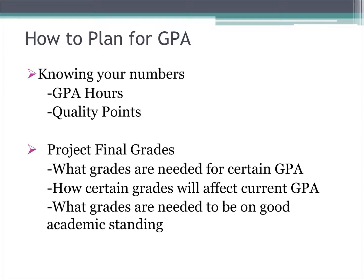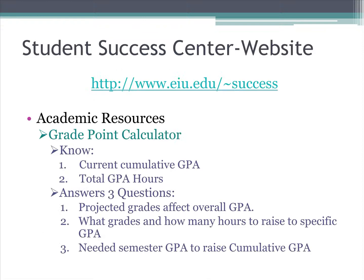Now that you understand how your GPA is figured and how to increase your GPA, you can begin to plan and estimate your future GPAs. Know your numbers, or know where to find them. By knowing your total values in GPA hours and quality points, you can figure your GPA. Before each semester begins, you should estimate your final course grade and calculate how those grades will factor into your current GPA — answering questions like: what grades do I need to earn a cumulative GPA of 2.0, or will my current grades drop my GPA below a 2.0?